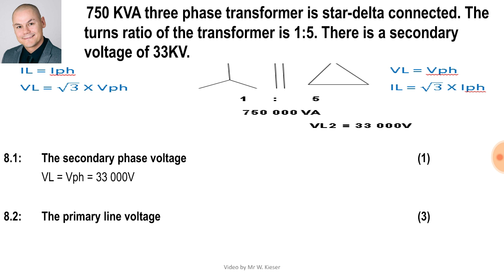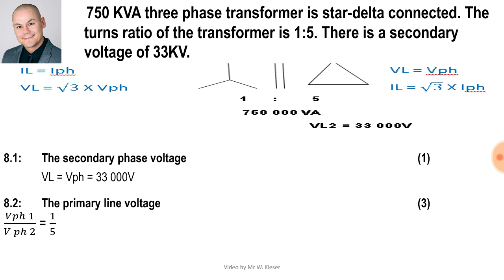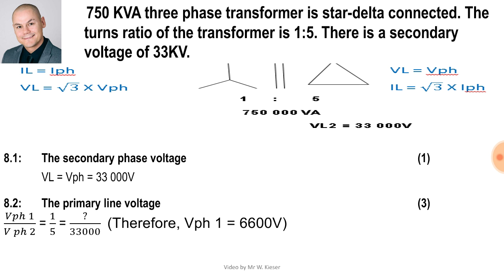To calculate the primary line voltage, we use the equation V phase one over V phase two. The ratio is 1 to 5 and the secondary phase voltage is 33,000 volts. The factor that goes into 33,000 five times is 33,000 divided by 5, which gives us 6,600 volts for V phase one. We can double check: 6,600 goes into itself once and into 33,000 five times. Now to calculate the primary line voltage: it's square root three times the phase voltage of 6,600, giving us 11,431 volts.